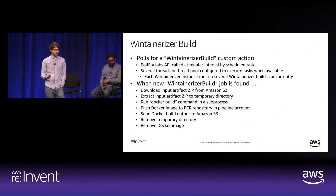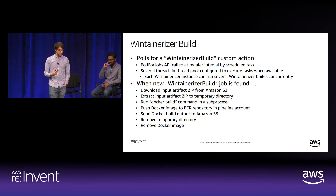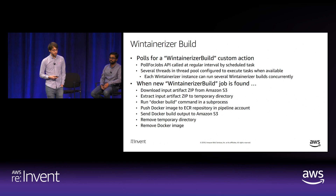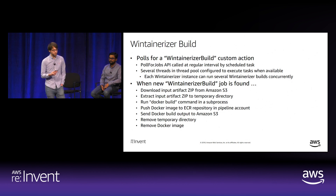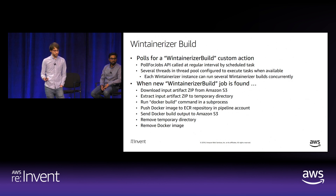The WinTainerizer implements two custom action types. The first is WinTainerizerBuild: it calls PollForJobs at a regular interval via a scheduled task, with a thread pool so each instance can find and run several builds concurrently. When a new job is found, it downloads the input artifact ZIP from S3—containing compiled code binaries and a Dockerfile—extracts it to a temp directory, runs docker build in a subprocess, pushes the new image to ECR in the pipeline account, stores build output to S3, then removes the temp directory and Docker image to prevent disk fill.